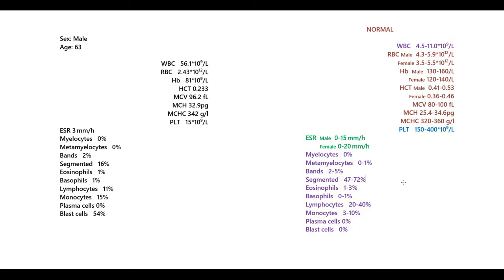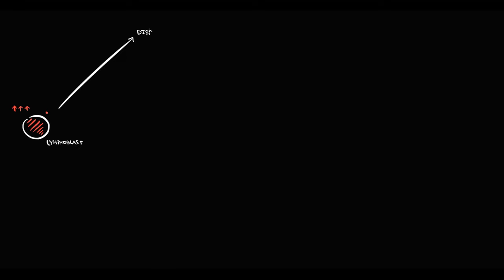In a typical blood analysis of a patient with acute leukemia, we see a very high white blood cell count caused by accumulation of blast cells. We also see a decreased lymphocyte count due to disruption of maturation. To summarize: acute lymphoblastic leukemia causes accumulation of blast cells, and additionally disrupts maturation of lymphocytes, resulting in lymphopenia, which greatly increases the risk of viral infection.